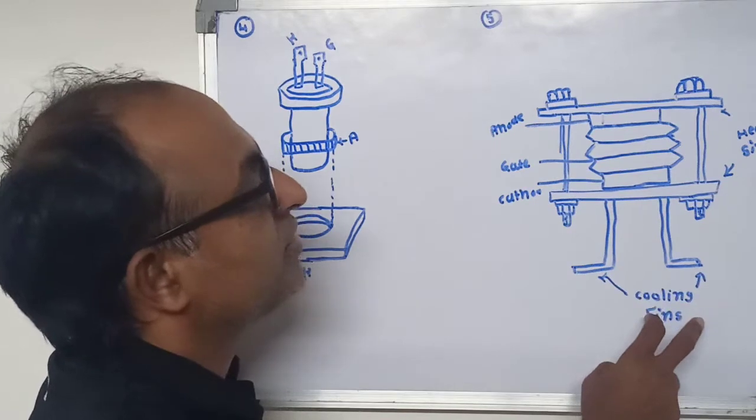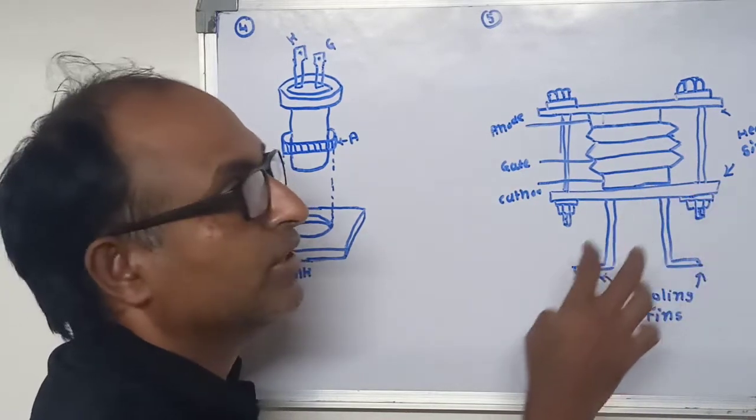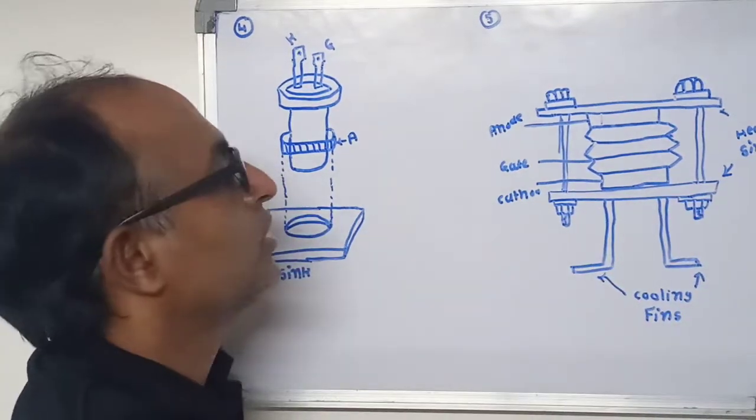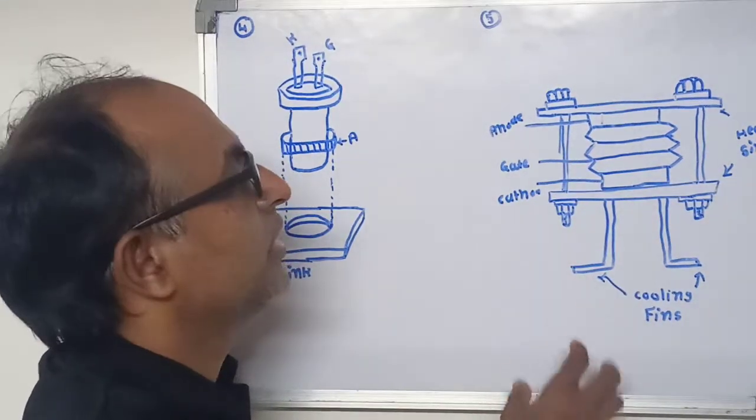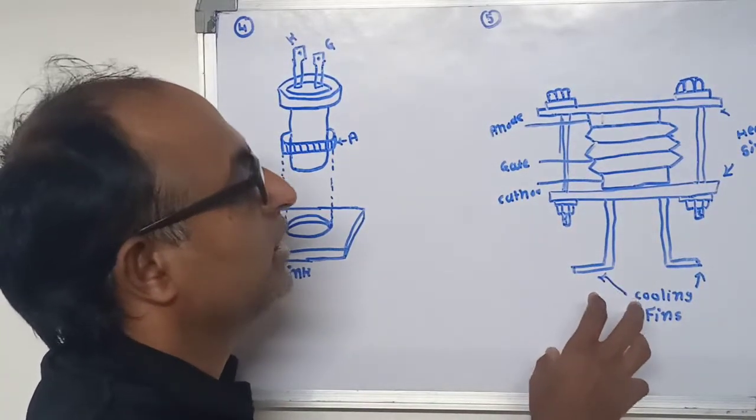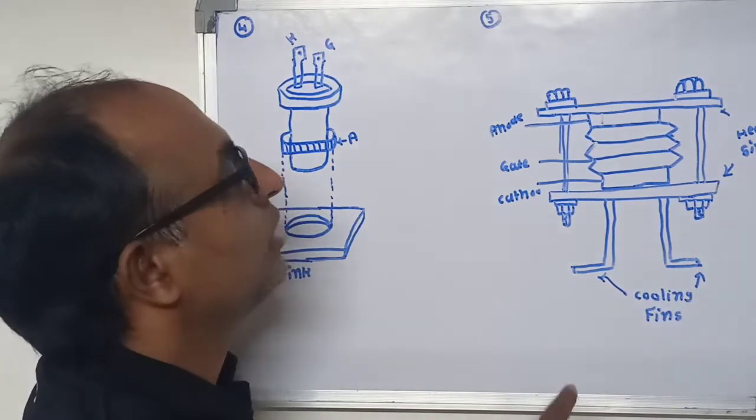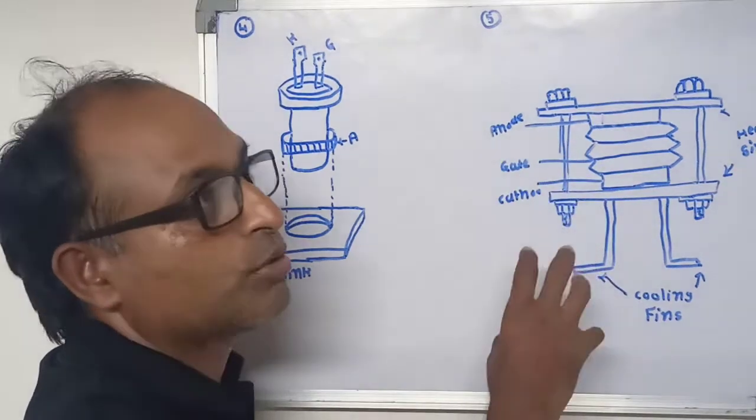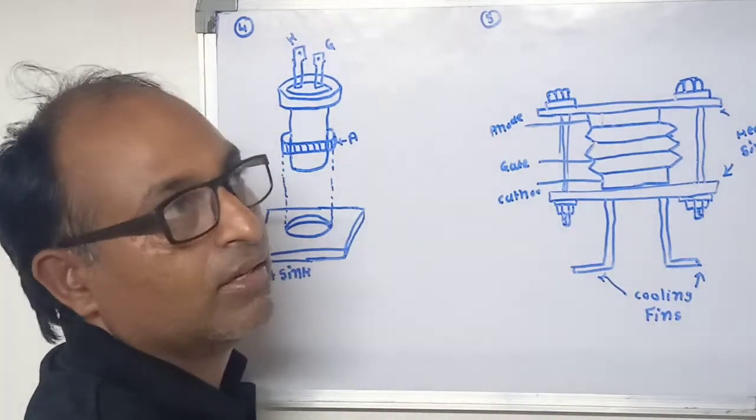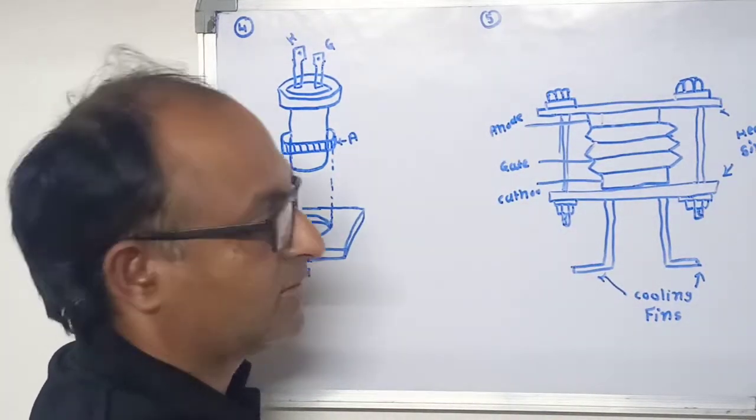Two cooling fins are provided in the heat sink for cooling purposes. Water, air, or any other cooling agent is used for the cooling purpose. These types of mounting are used for very large current capacity of the SCR.